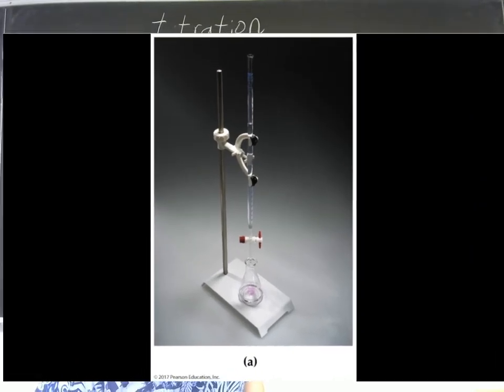So here we have an Erlenmeyer flask at the bottom. The Erlenmeyer flask is where you'll put your analyte. And above it is an instrument called a burette. The burette is going to hold your titrant. And it's got markings on the side so that you can measure the volume that is contained in the burette. And you can measure the volume that is being delivered by comparing the final and initial amounts. And then at the bottom there's a stopcock or a knob that will allow you to slowly add titrant and then cut it off right when it needs to be cut off.